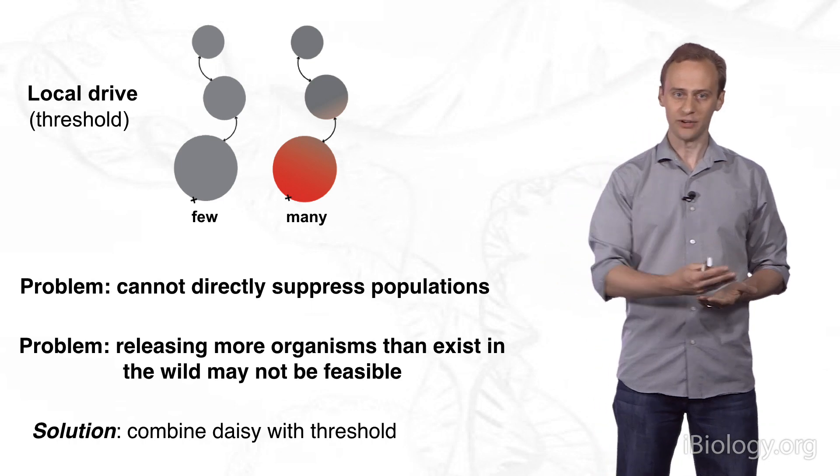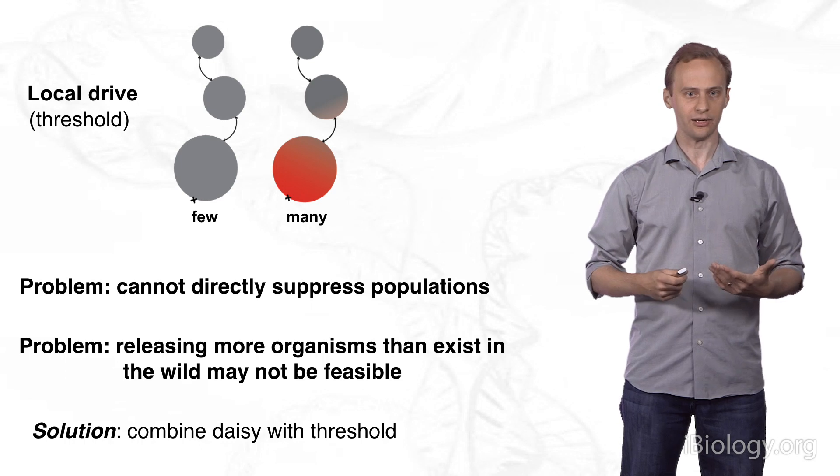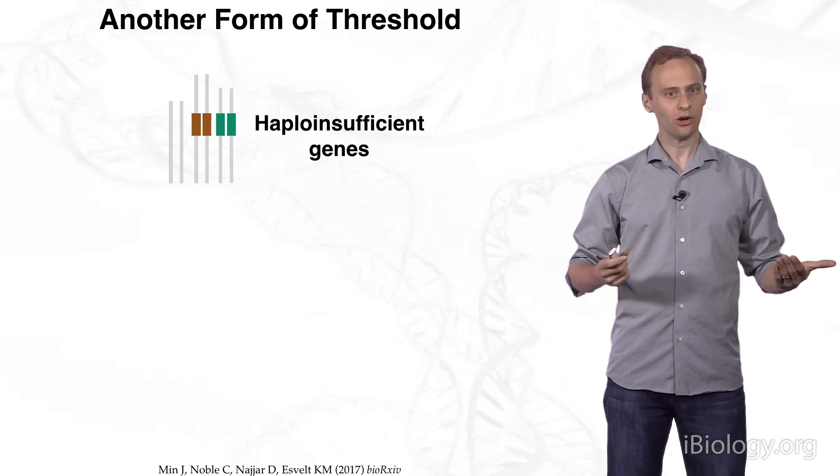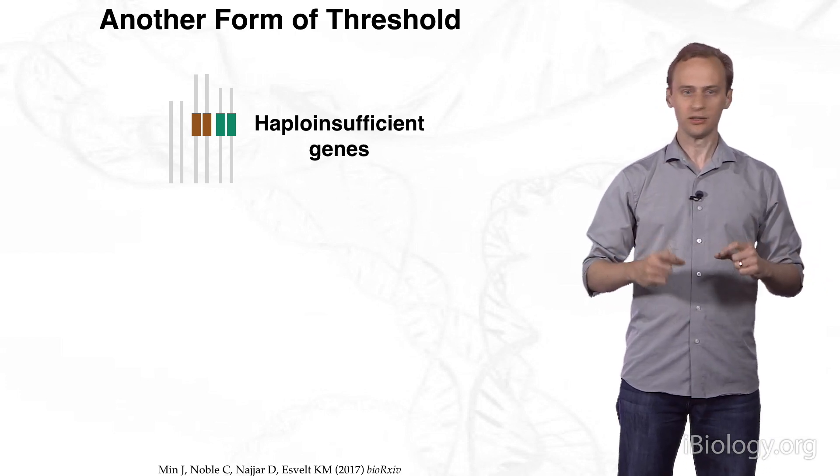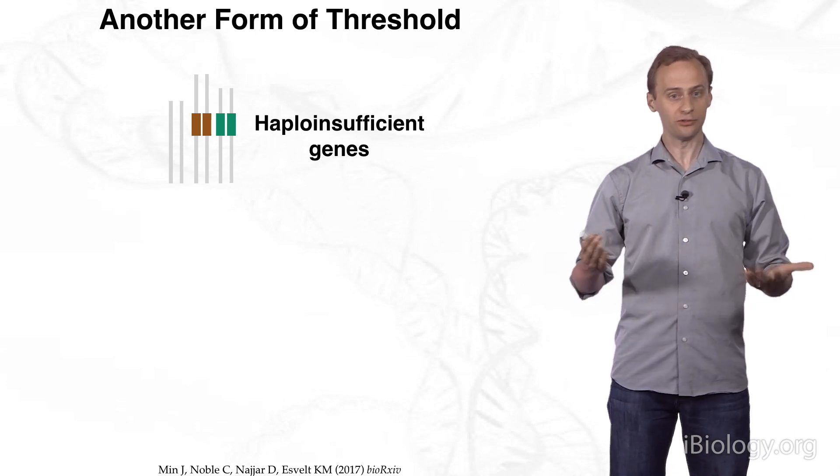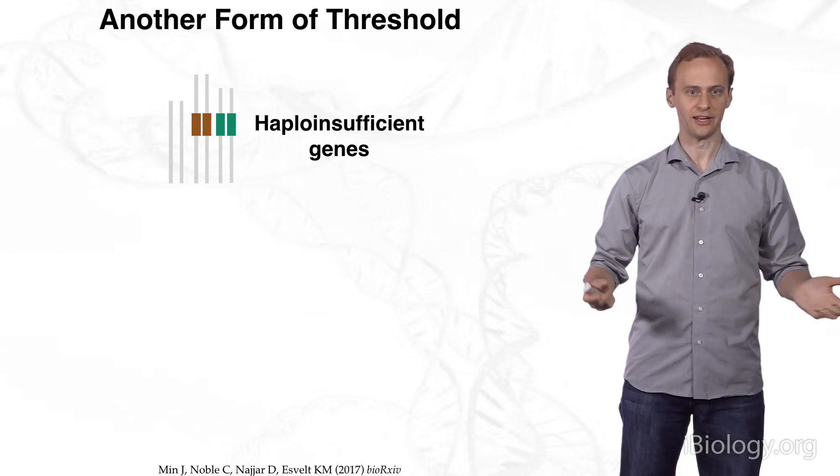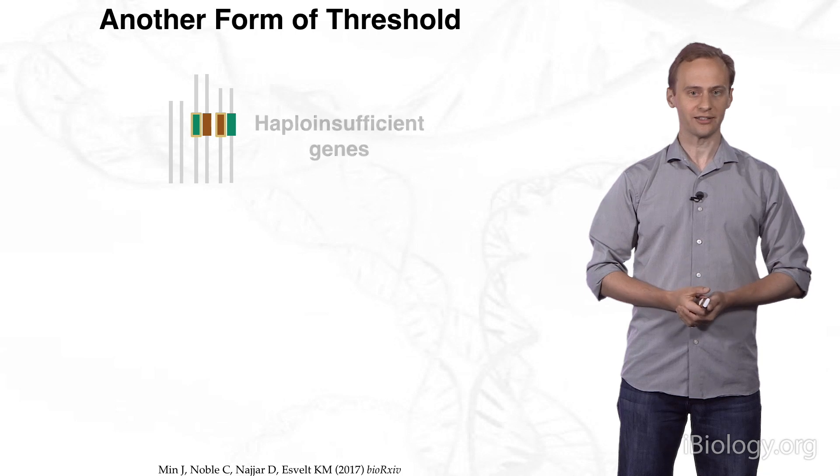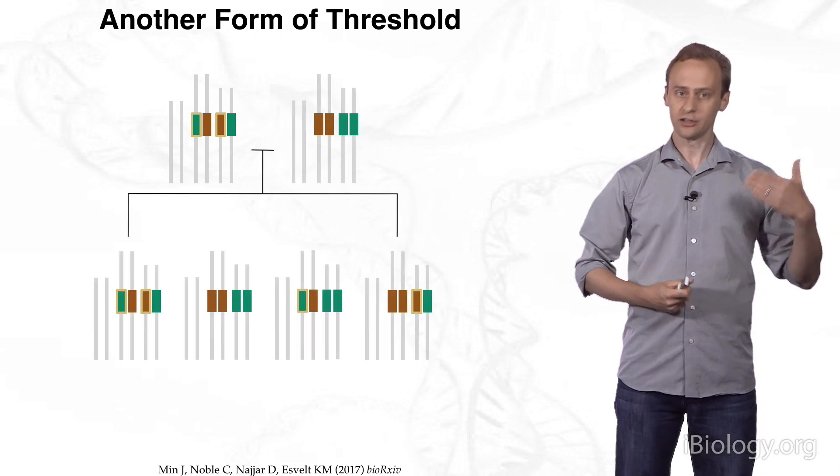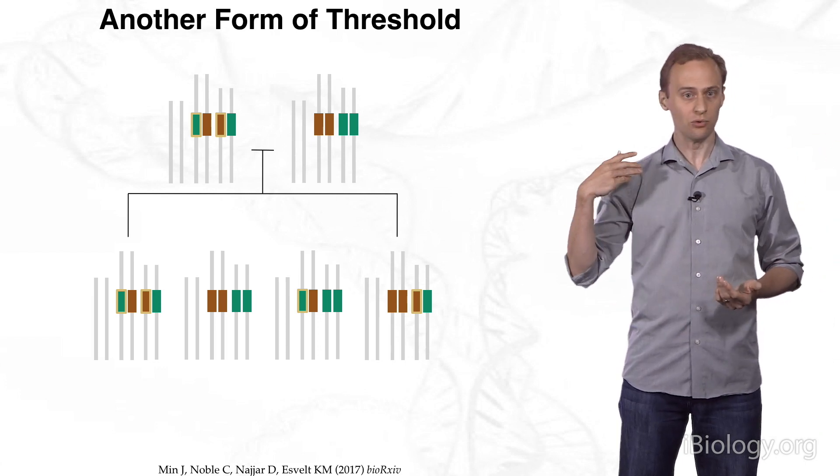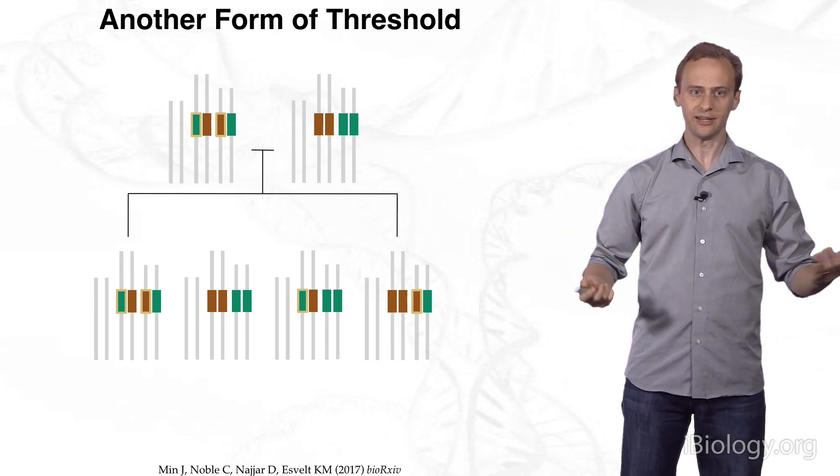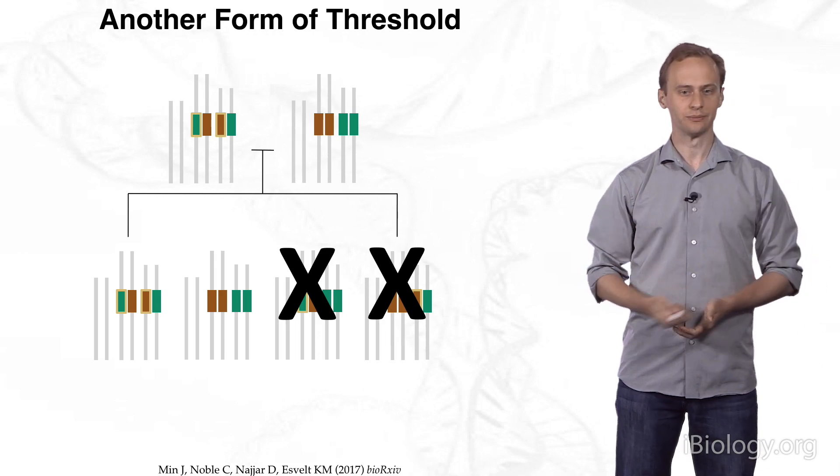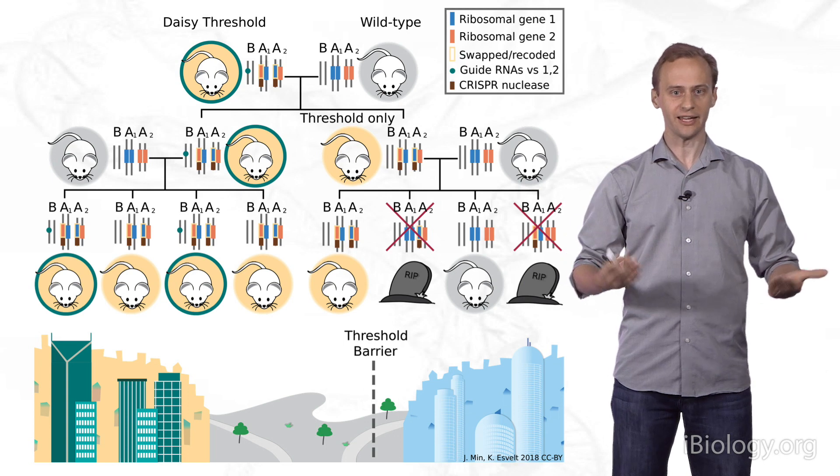One potential solution is to combine a self-exhausting drive with a threshold drive. My group is working on building what we call DAISY threshold systems. A DAISY system cannot spread a chromosomal translocation, so instead we're looking at creating a different form of threshold drive, in which we deliberately swap two haploinsufficient genes. Haploinsufficient just means that you need two copies in order to live. If you have one copy, that's just not enough. If you take two haploinsufficient genes and you swap their positions, just the genes, not the whole chromosome arms, then you get the same effect. When mated with a wild-type organism, offspring can either inherit two swapped copies, and they'll be fine, or two wild copies, in which case they'll be wild-type. But the other two possibilities are inheriting one swapped and one wild-type, and these organisms are missing a critical haploinsufficient gene, and so they will perish.